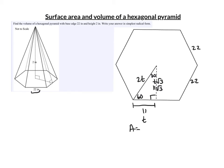So the area of this hexagon is one half the apothem times the perimeter, which is one half 11 root 3. And the perimeter would be 22 times 6, which is 132.